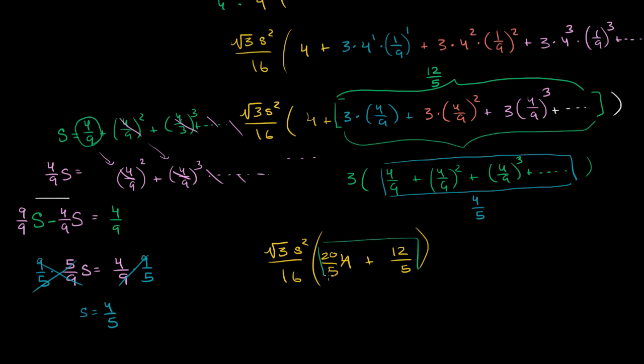This is really the home stretch now. This is very exciting. We're about to find the finite area of something that has an infinite perimeter. I don't want to get messy in all the excitement here. √3 s²/16 times 32/5.